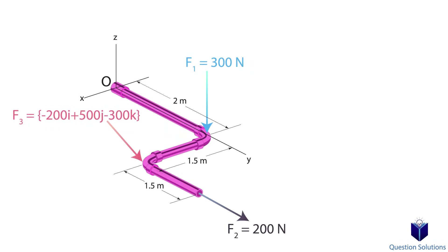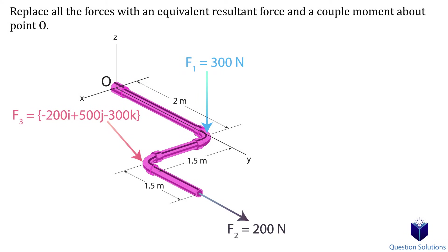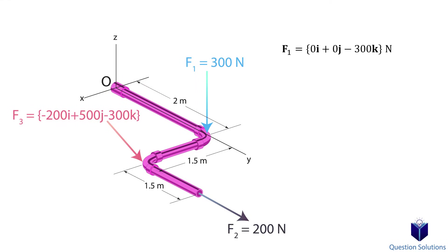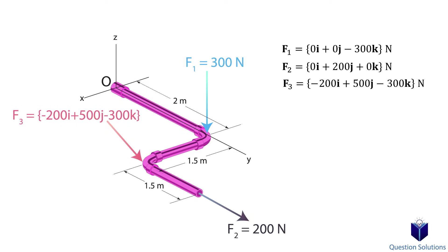Let's take a look at a problem involving vector analysis. Same as before, we need to find an equivalent resultant force and a couple moment at point O. We'll start with the forces first. Force F1 only has a z-component, so we write it in Cartesian form. Force F2 only has a y-component. Force F3 is already given to us in Cartesian form. We find the resultant force by adding all the i-components to i-components, j to j, and k to k.